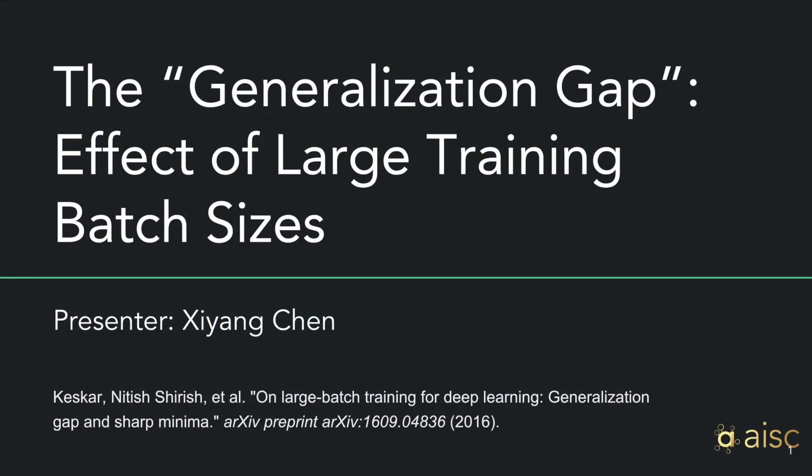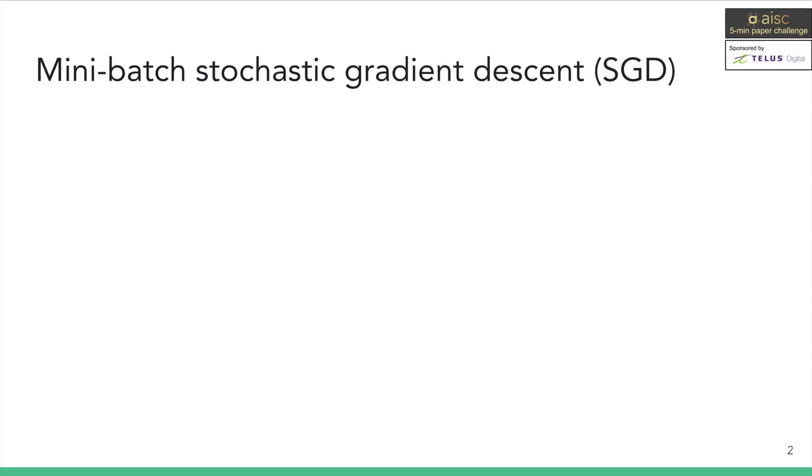Hi, my name is Xiyang. In this video, I'm going to explain a 2017 paper on the effect of using large batch sizes in training deep neural networks. Mini-batch stochastic gradient descent is an effective algorithm for training neural networks. Here is a quick recap of the algorithm. We first split our dataset into many small batches. For each iteration, we calculate and average the gradients in the batch, which we then use to update our model parameters.